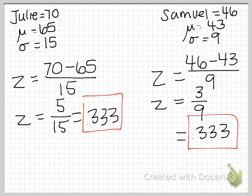So even though at first glance, it looks like Julie is doing a lot better than Samuel, now we can actually compare them in relation to their own distributions and see whether or not one is actually doing better than the other. So this is what I mean by being able to compare apples to oranges.